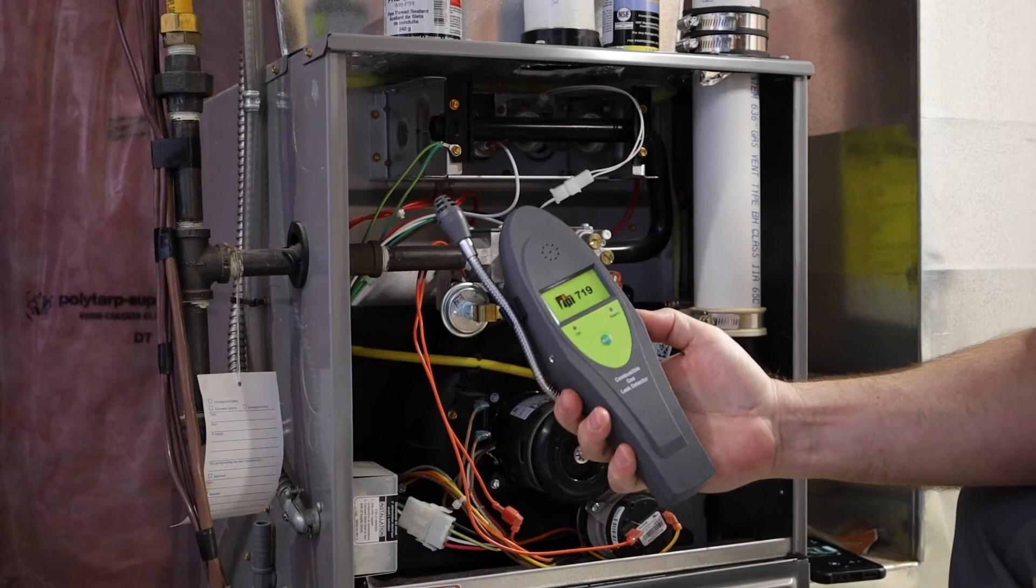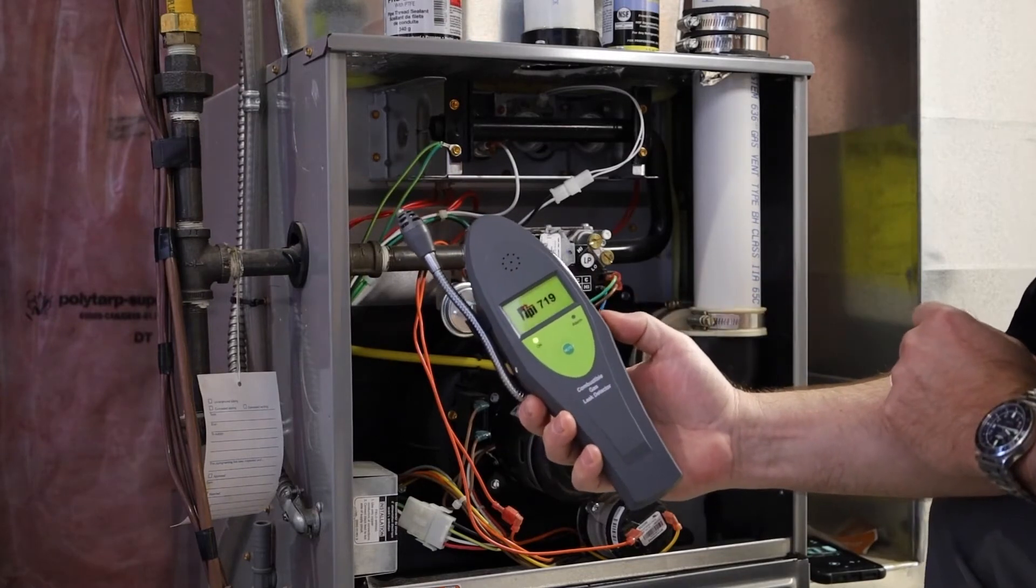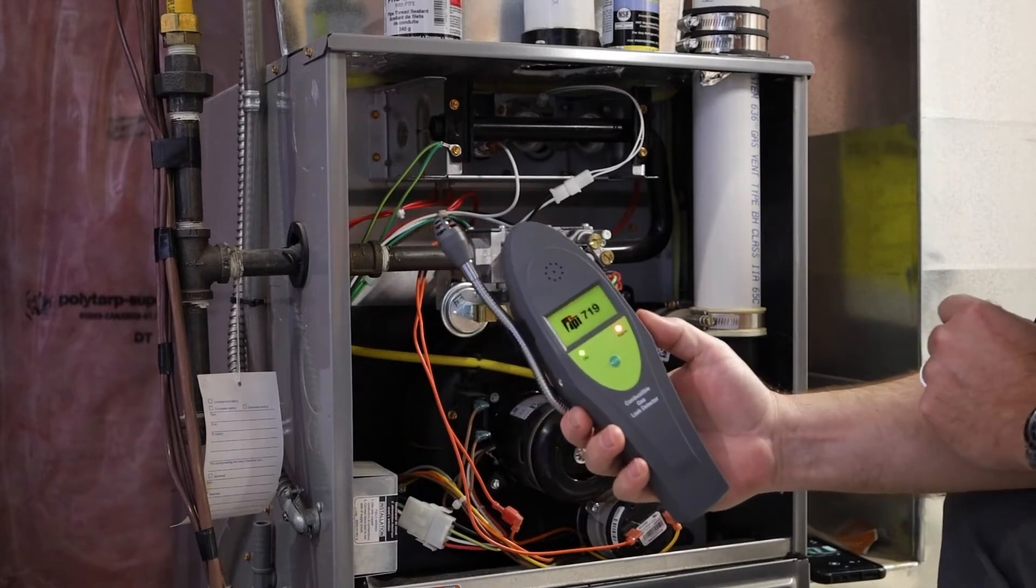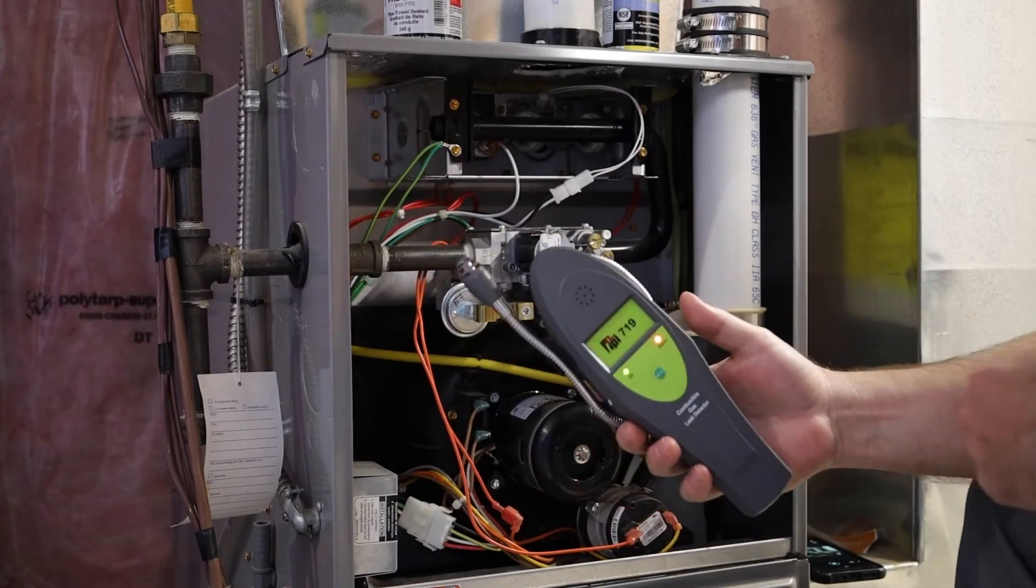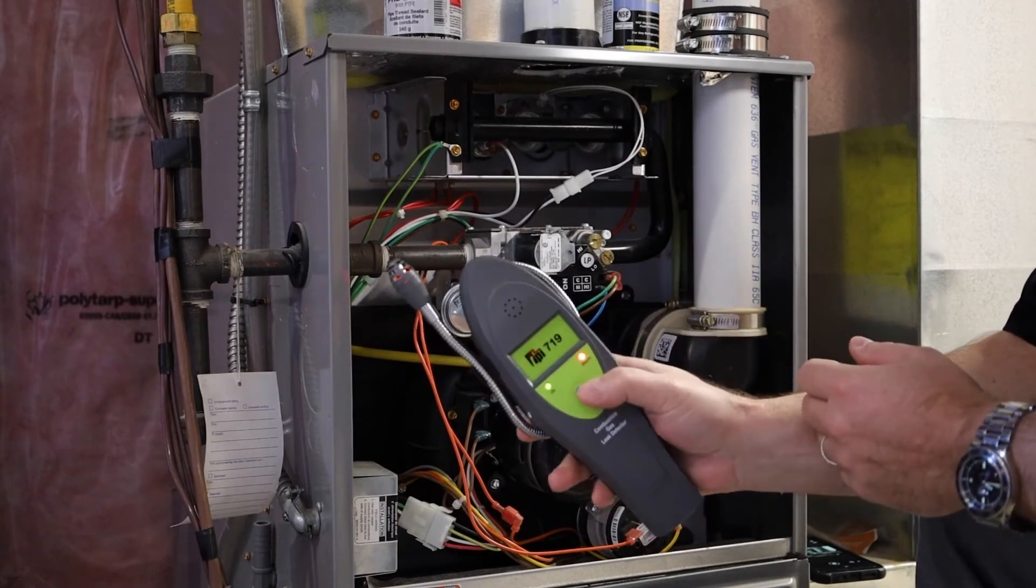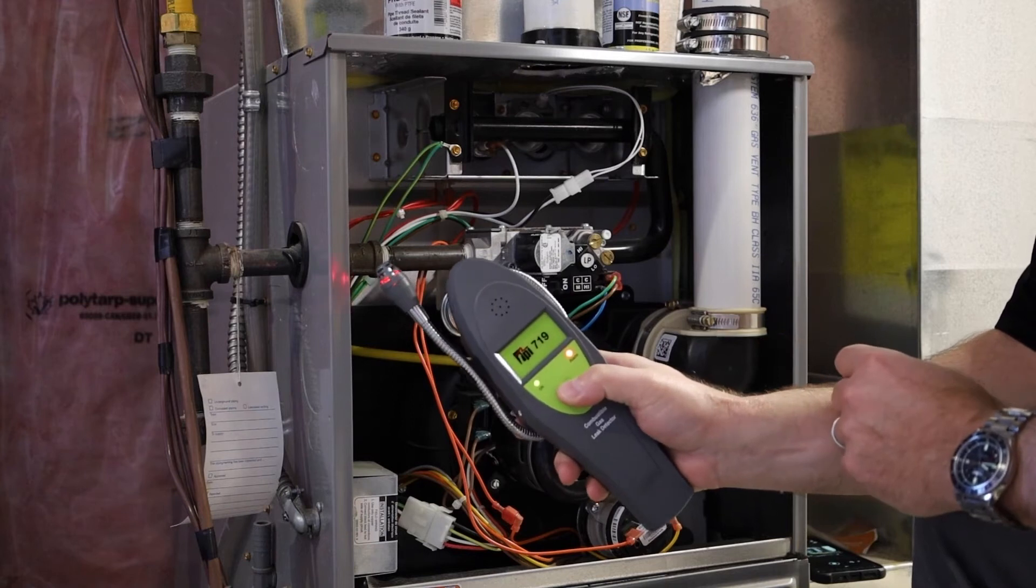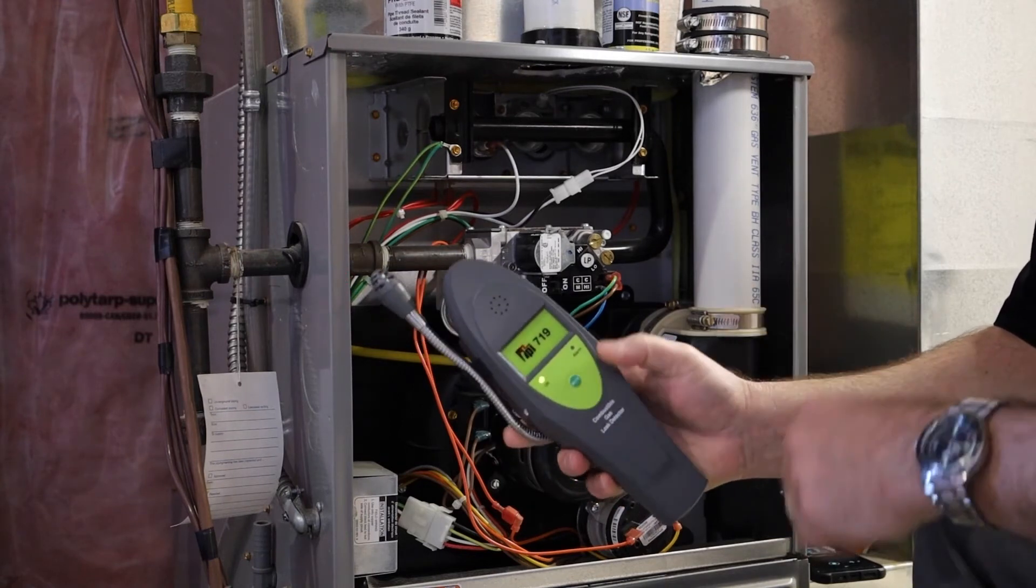The next one I have here is the 719. Now it's a little different, it's got a thumb wheel on the side. Again you want it to warm up, so give it 30 seconds, maybe a minute, depending on the ambient temperature. It's got a mute button so you don't have to listen to it.